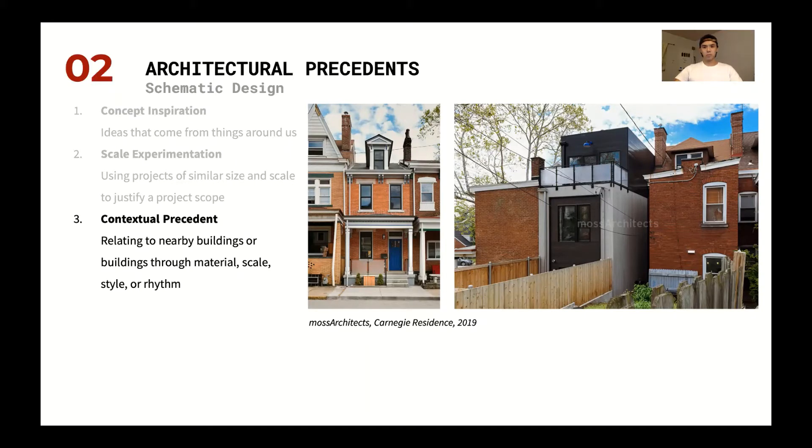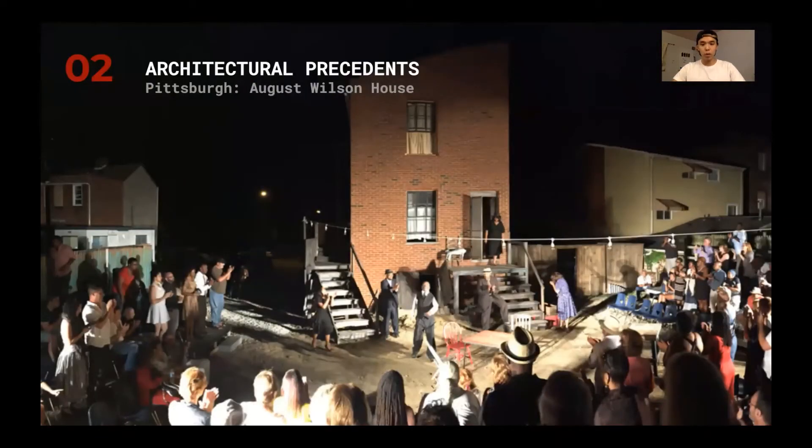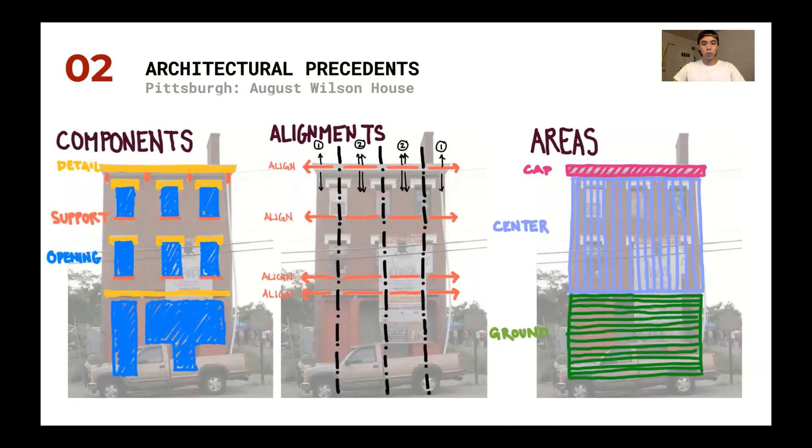What we're going to be doing is we're going to be doing analyses like this, where we actually go through specific components. You might be able to find alignments. Or you might be starting to categorize the building by areas. And so in the next slide, what you're going to do is you're going to take your own attempt at creating these different analysis diagrams and trying to understand and break down the building into whether it be detail supports and openings, or you create alignments between different building components. What I did was actually align the center line with windows and then also the horizontal elements, and talk about how it might extend out further. And then the final diagram actually starts to look at different areas, whether it be the cap, the center, or the ground, and how they relate to one another in the form size and shape.